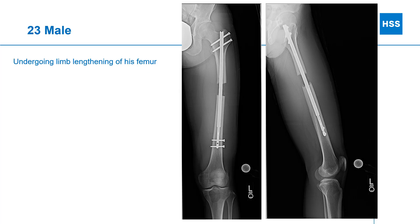Here we have a 23-year-old male who was undergoing limb lengthening of his left femur, which was progressing well. The bone was distracting and he was forming new bone in the distraction gap. But note how odd the bone looks in the tibia, which was not undergoing the distraction. There's this area that's clearly defined and looks more radiolucent than the surrounding bone.